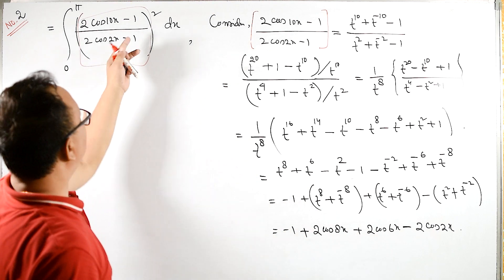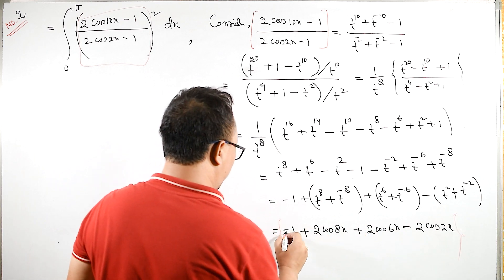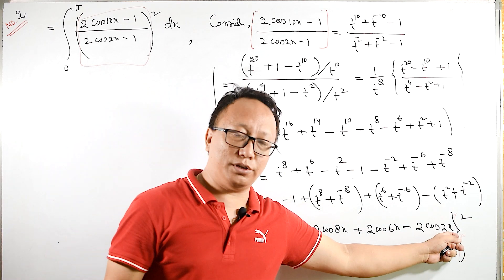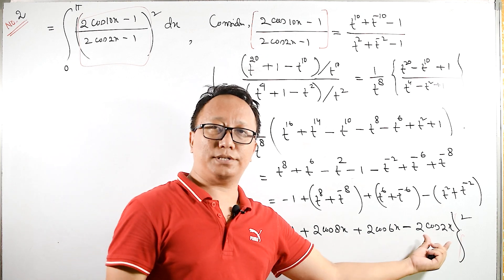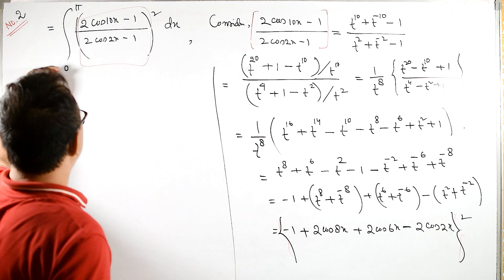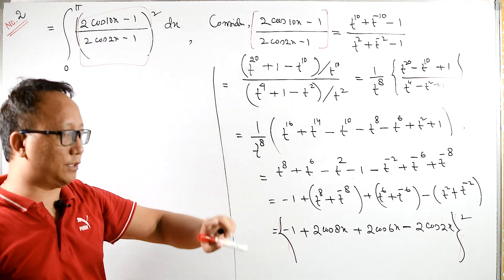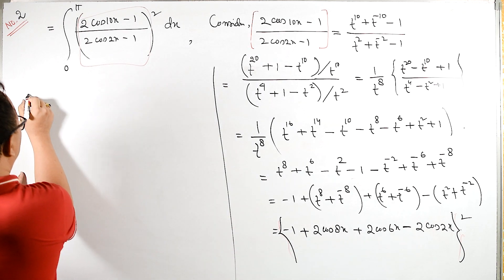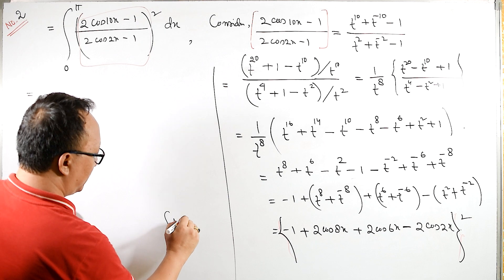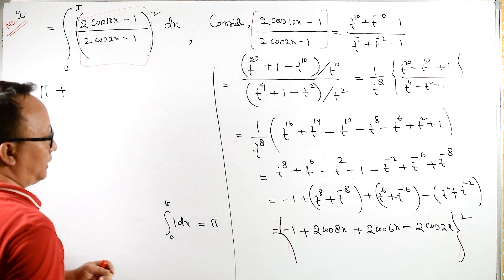Now we have this whole squared outside, so we need to do squaring. Let's call the terms a, b, c, d. The whole square gives: each term squared, plus twice each cross product. But remember the limit is from 0 to π — for the cross terms, when multiplied you get cosines, whose integration from 0 to π gives sine, and sine of 0 and sine of π are both 0. So now: the term (−1) whole squared is 1, and the integral of 1 dx from 0 to π gives π.